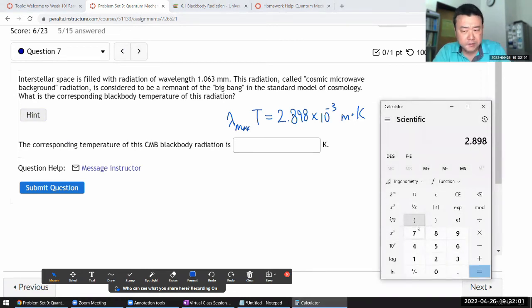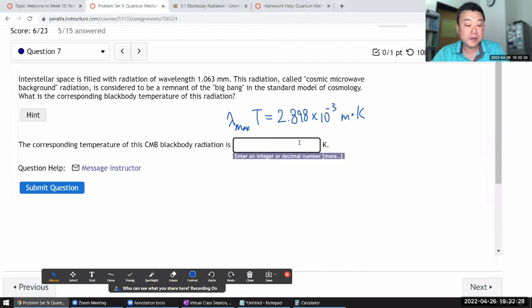The constant is 2.898 times 10 to the power of minus 3 divided by the given wavelength. We are given it in millimeters, so it's 1.063 times 10 to the minus 3 millimeters. When I get the answer, it's smaller than the numbers we're used to seeing—2.73 Kelvin, and that is the correct answer.